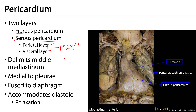The middle mediastinum is found below the sternal angle plane, and it is also medial to the pleura lining the pulmonary cavities. Inferiorly, the pericardium is fused to the diaphragm, so there will be movement of the pericardium and the heart within as the diaphragm contracts and relaxes with respiration.